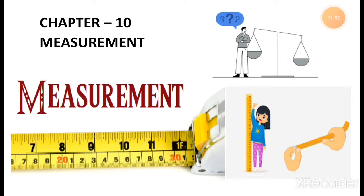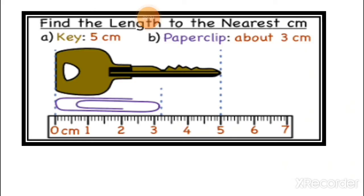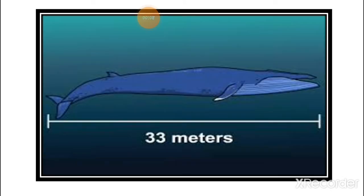Let's do revision of the previous lecture first and then we are going to today's topic. The revision of the previous lecture is complete. Let's start today's topic. You can see in the picture — which animal is it? Can you identify the name of this fish? This is a shark, and you can see the length of it is measured here. The length of this shark is 33 meters.